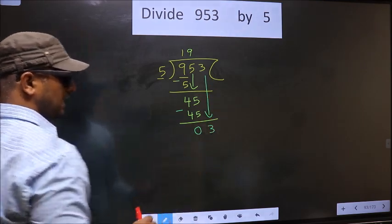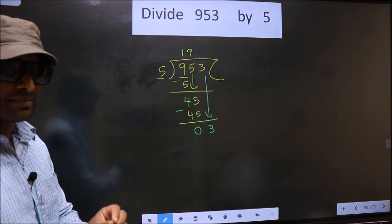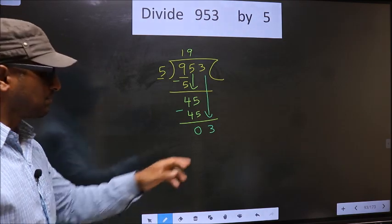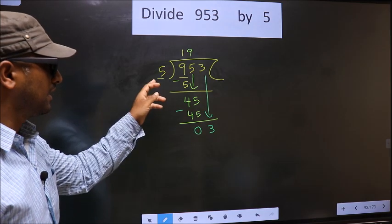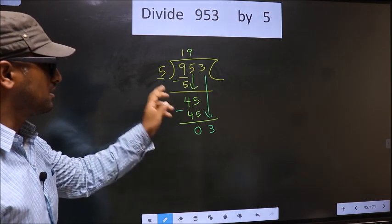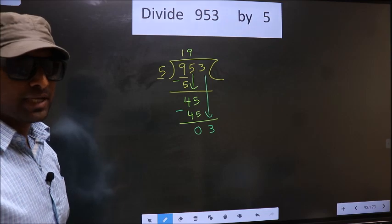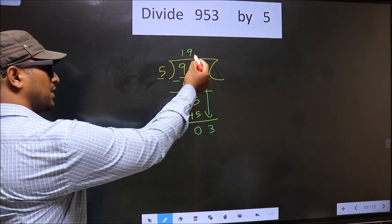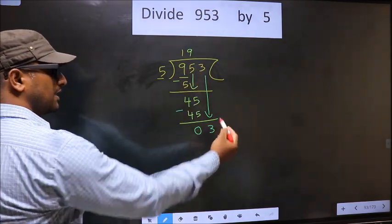This is where the mistake happens. And the mistake is this. Here we have 3. Here 5. 3 is smaller than 5. So what many do is they put a dot and take 0 here.